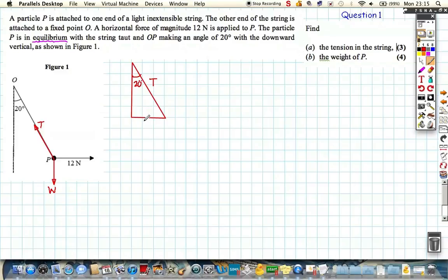So, this is the opposite, so this is T sine 20 degrees, and this is the adjacent, so this is T cosine 20 degrees. Now, that's going to make our life a little bit easier. Before we even start to solve the question, I'm going to resolve in two different directions. So, I'm going to resolve in a horizontal direction, in the right sense, so right is positive.